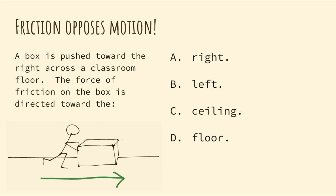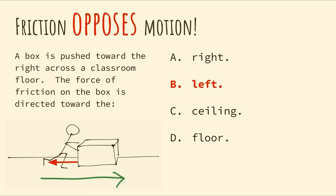Friction opposes motion: if a box is pushed to the right across the floor, the force of friction is directed to the left. The green arrow at the bottom is not an FBD — it just indicates the object is moving right. On a proper FBD, the force applied would be drawn from the right side of the box pointing right, and the frictional force vector would point to the left.